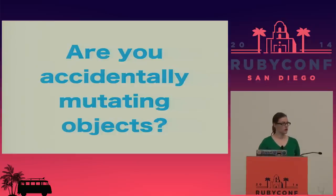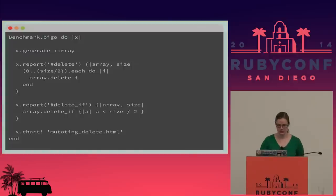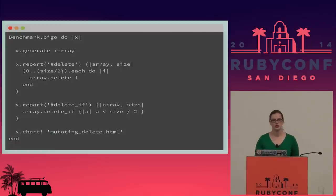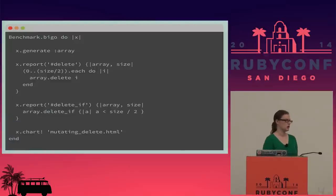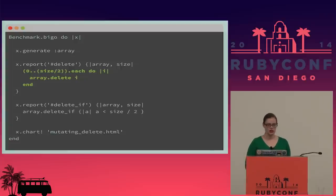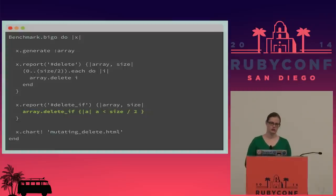The next question: are you accidentally mutating objects in your benchmarks? This can affect both benchmark-ips and benchmark-bigO. Here I'm writing a benchmark to illustrate how much better `delete_if` is than trying to iterate over a bunch of values and deleting them individually. There are a lot of really great methods in the standard library, and they're there for a reason. I want to delete half the items in my array each time — iterating over all those numbers and deleting them — versus using `delete_if`, which passes a block to tell it which items to delete.